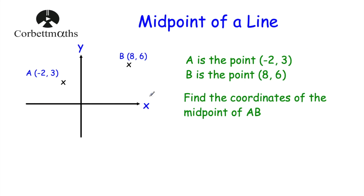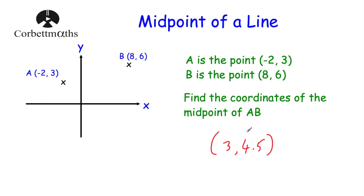The questions so far have been on coordinate grids where we can look and see the midpoints. Now we have a sketch — not drawn accurately or to scale. We've been asked to find the midpoint of line AB, where A is (-2, 3) and B is (8, 6). Adding the x coordinates: -2 plus 8 equals 6, divided by 2 equals 3. Adding the y coordinates: 3 plus 6 equals 9, divided by 2 equals 4.5. So the midpoint of line AB is (3, 4.5).